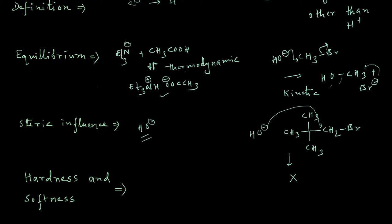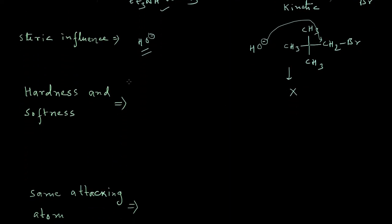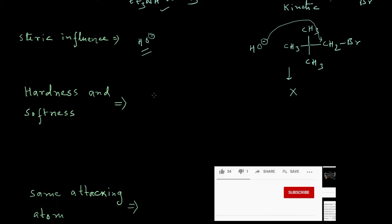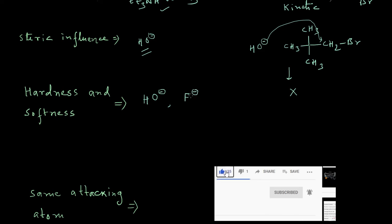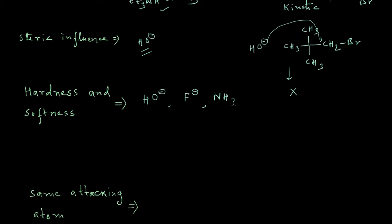Considering electronegative elements such as oxygen, fluorine, and nitrogen — these are highly electronegative elements. If these atoms possess any negative charge or any lone pair, they will hold it very firmly. That lone pair and negative charge will be held by highly electronegative elements like oxygen, fluorine, or nitrogen very tightly; they will not want to share their pair of electrons with anybody.